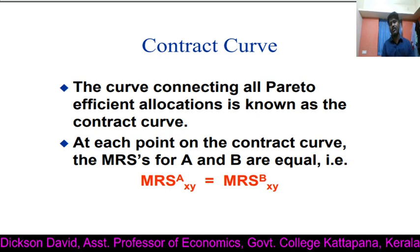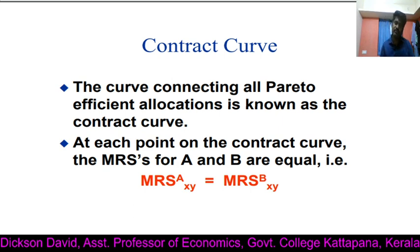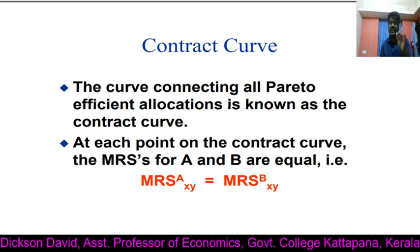So, at each point on the contract curve, the marginal rates of substitution of individual A and individual B are equal. Thank you.